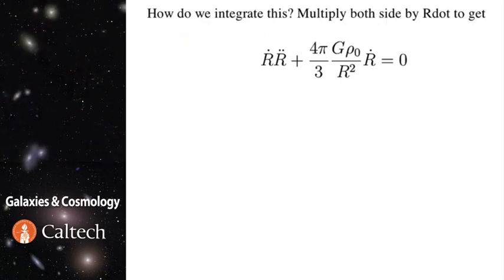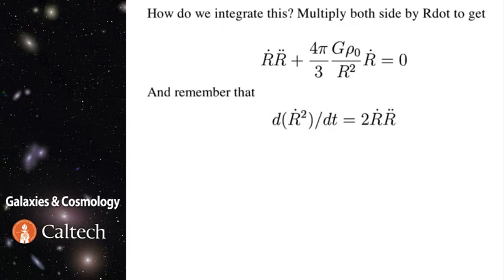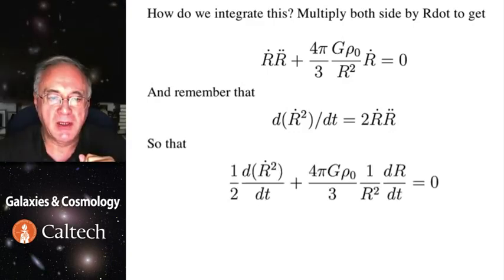Well, we can integrate that in following fashion. We multiply the whole thing with first derivative of r, r dot. And now we remember that from the calculus that derivative of the square of the first derivative is given by this expression. So we can plug that in.